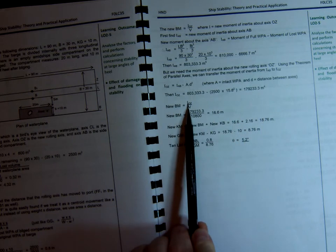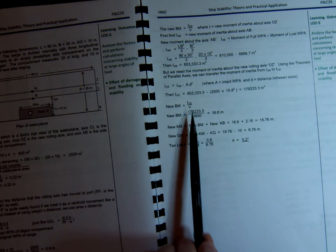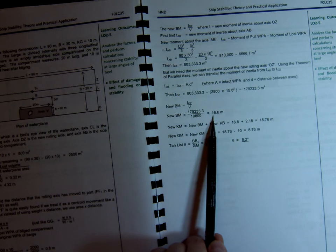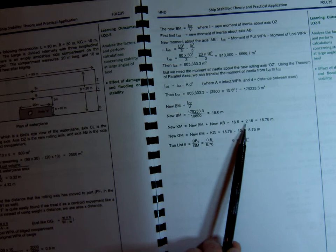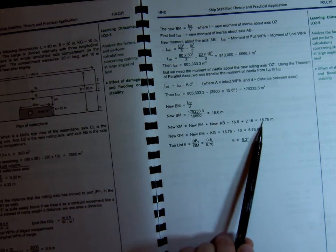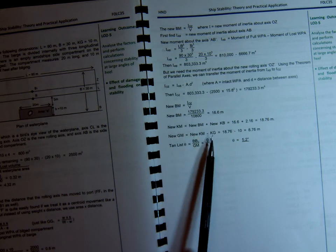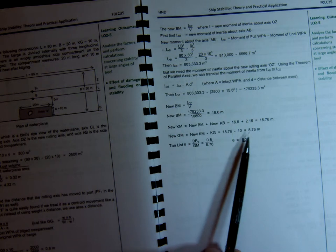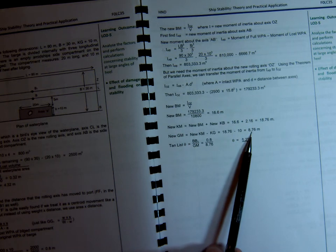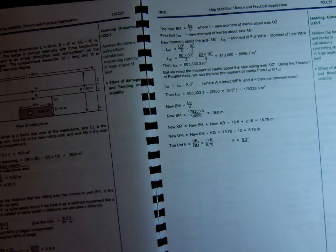So the new BM is IOZ over V. Don't forget, V has got to be the original volume, because the displacement hasn't changed. So the new BM is 16.6. The new KM will be 16.6 plus our KB of the new draft, 18.76. So the new GM will be this new KM minus our original KG because that hasn't changed. So our new GM is 8.76. Tan theta is BB1 over GM, 0.8 over 8.76, 5.2 degrees.